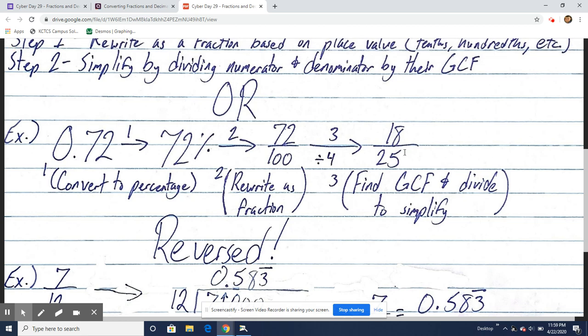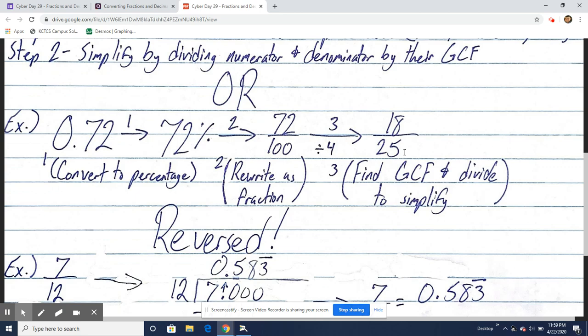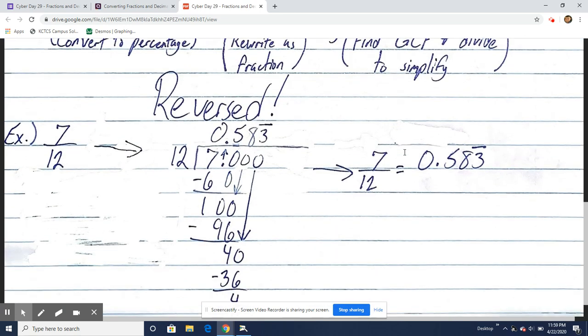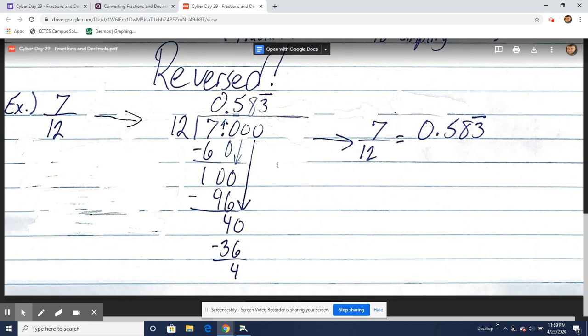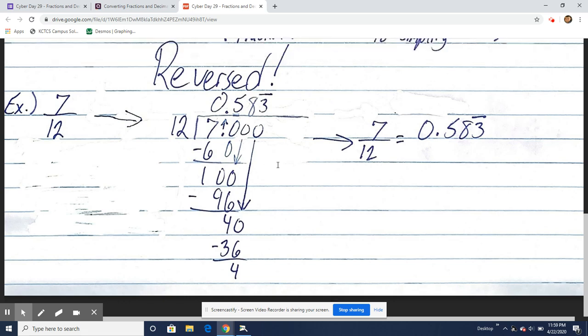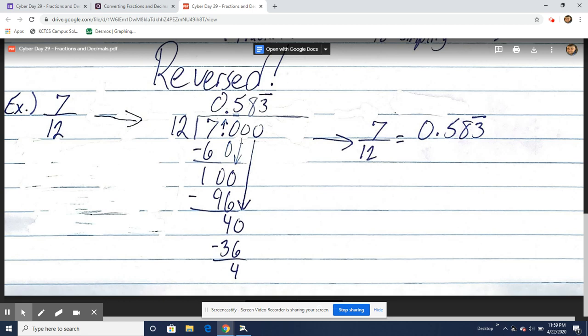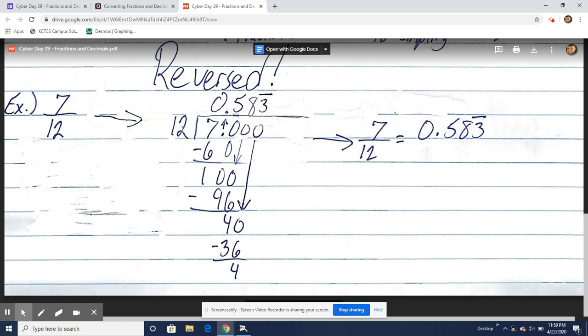Now we're going to reverse that and find out how to convert a fraction back to a decimal. In this example, we have 7 twelfths. So what you need to do is divide the numerator by the denominator. So 7 divided by 12.